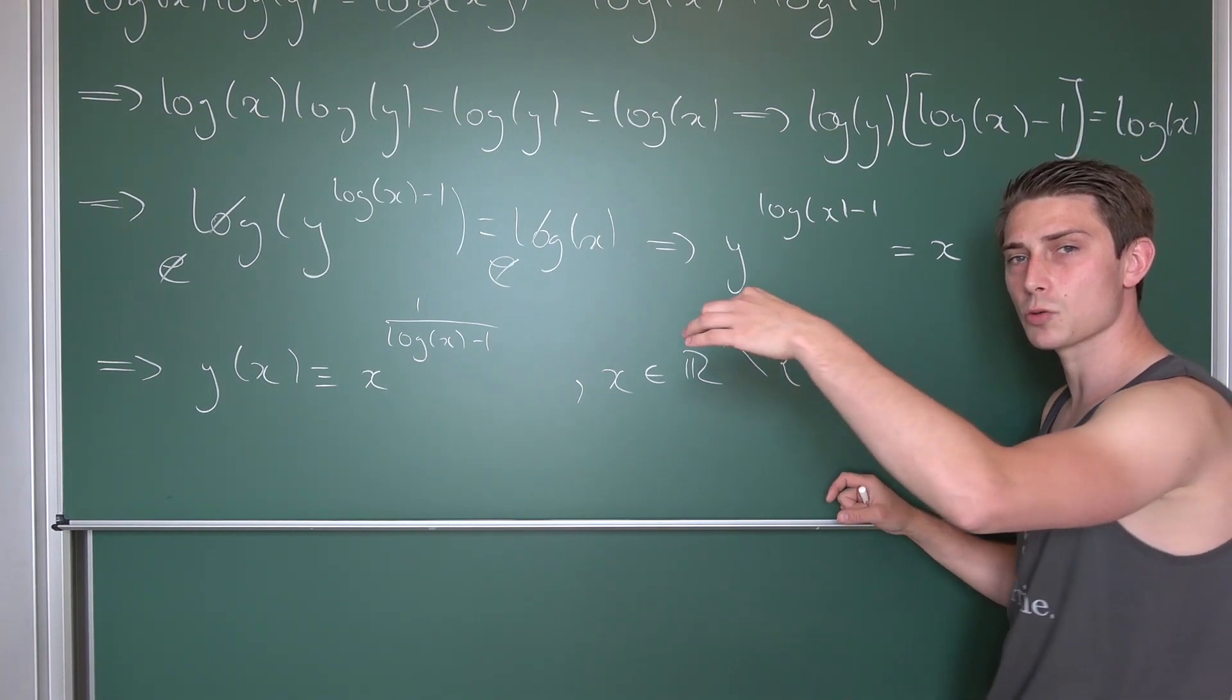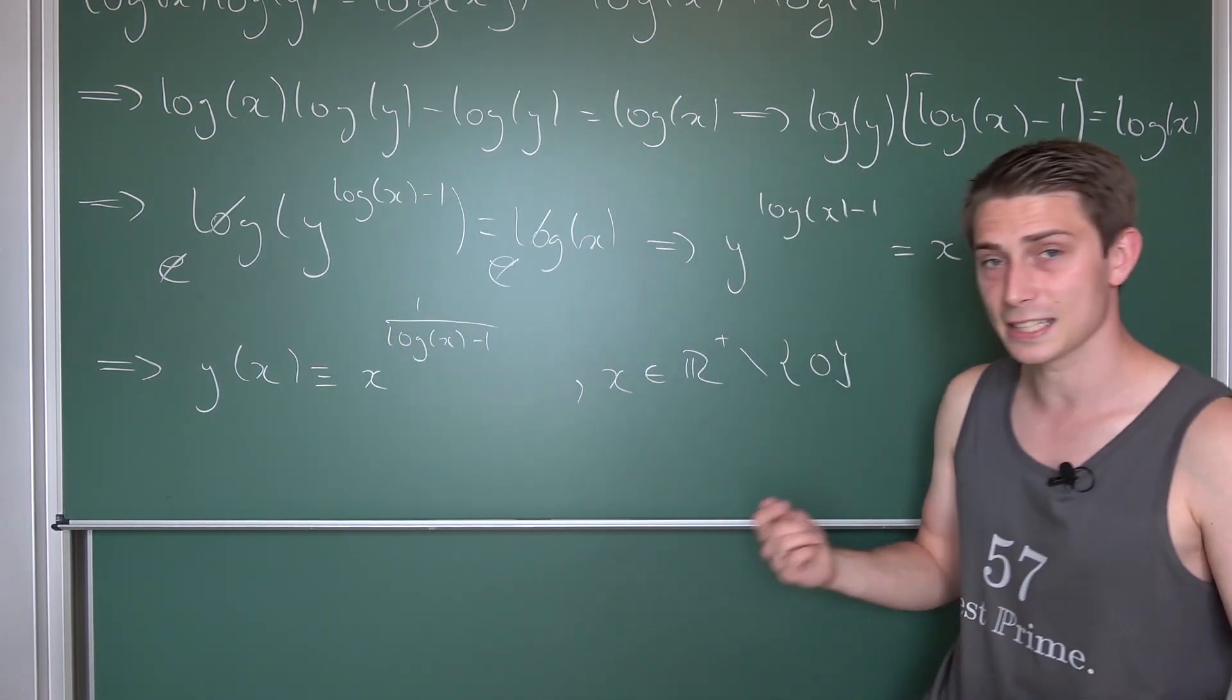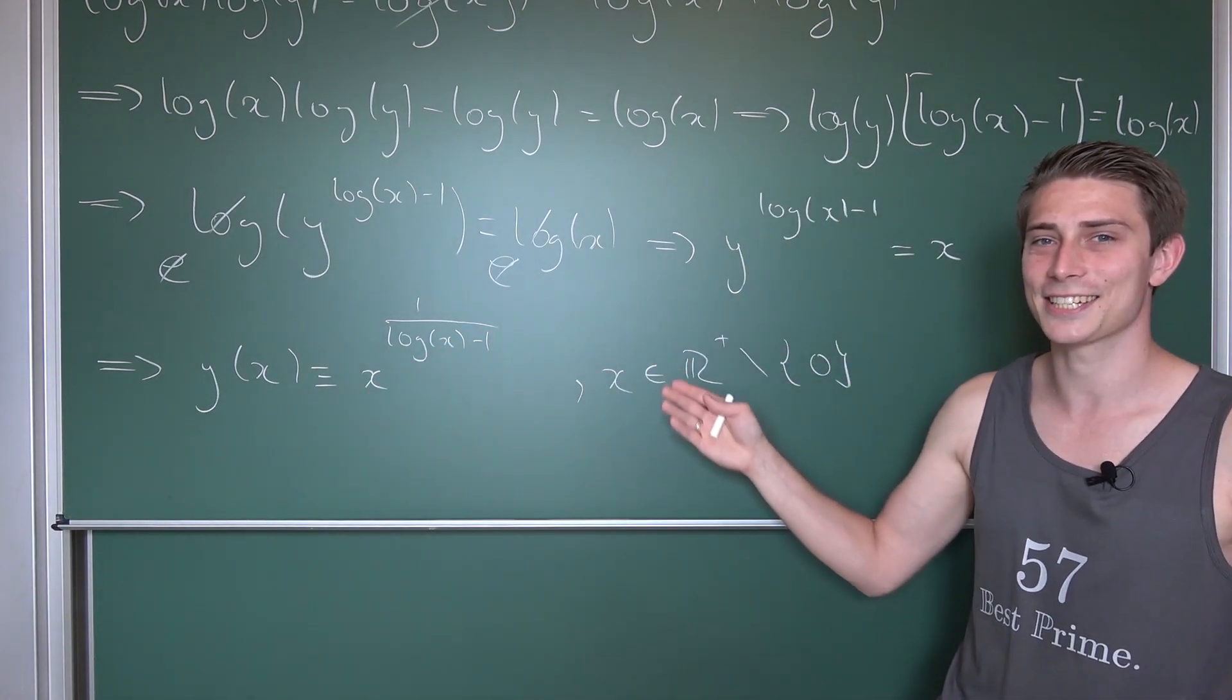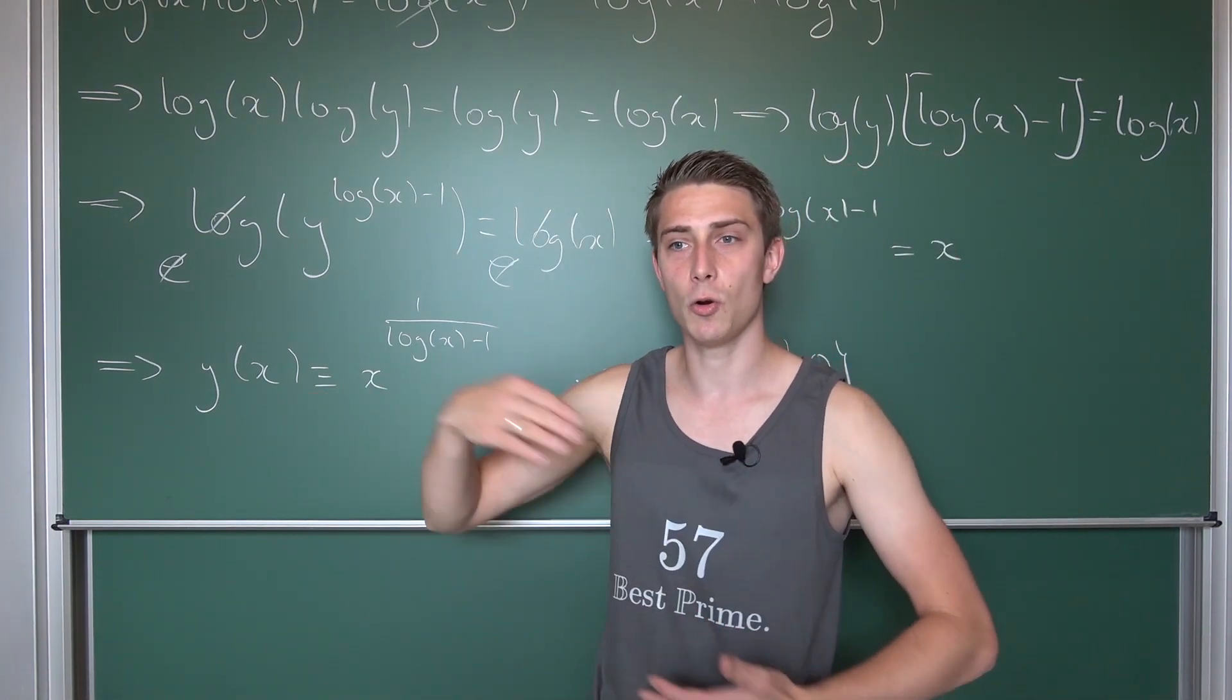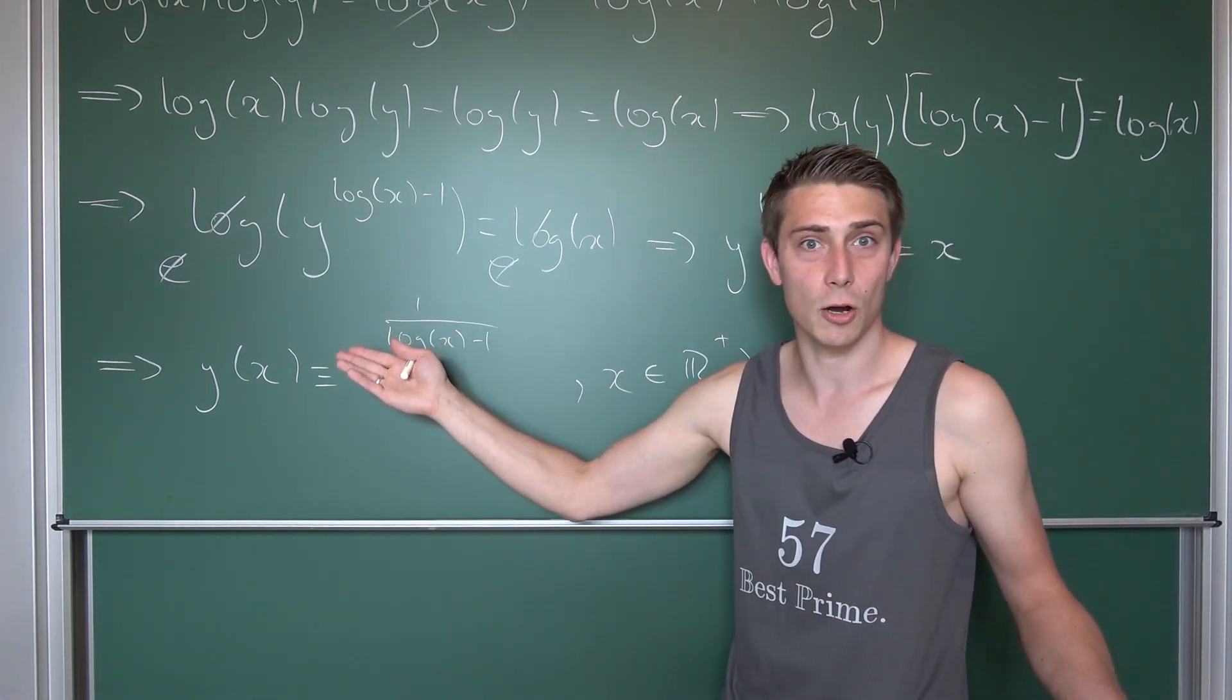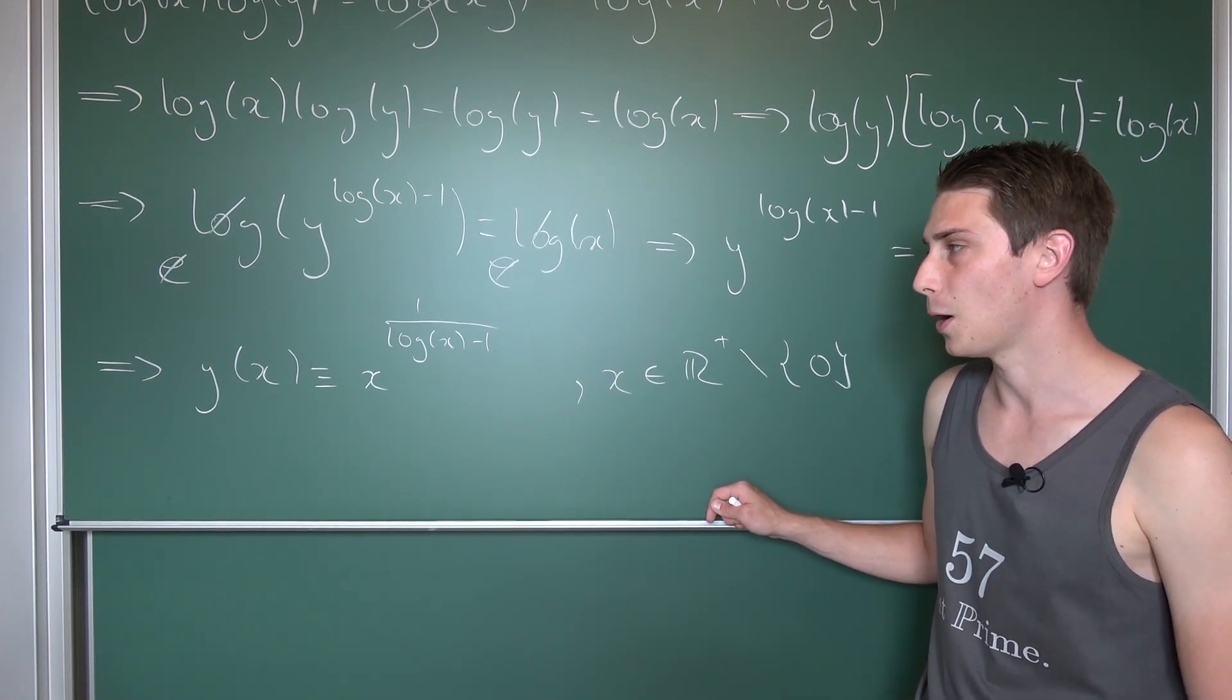Really cool thing is, and this is where Flammable Maths 2 comes in, is that on this interval our function here is actually bijective, meaning it allows for a real nice inverse. This function is actually its own inverse, which is really cool. So coming up with a function which is its own inverse is not too easy in general, but here it just also happens that it's its own inverse, which is really cool. And you can go over to Flammable Maths 2 and take a look at this part.